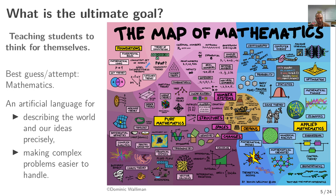So what's the ultimate goal? We are teachers and we want to teach students to think for themselves. My best attempt is to actually teach mathematics, because that's an artificial language for describing the world and our ideas precisely. It also makes complex problems easier to handle.